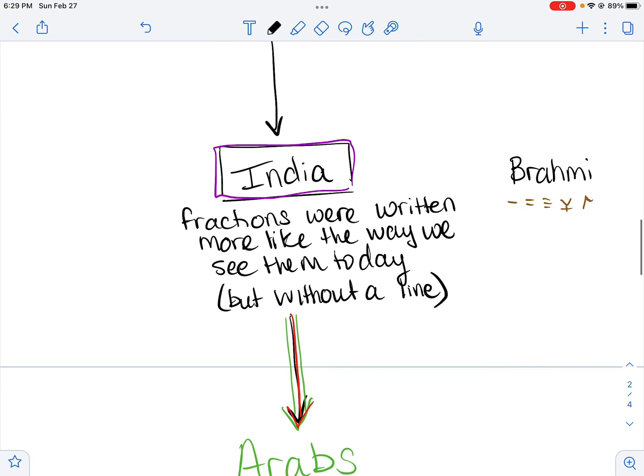Okay, another thing to note in the history of fractions is the country India. They wrote them more like the way we see them today. Okay, they used their own symbols called Brahmi. And they would write fractions more like the way we see them. Like they wanted to write two-fifths. They would write it like that.